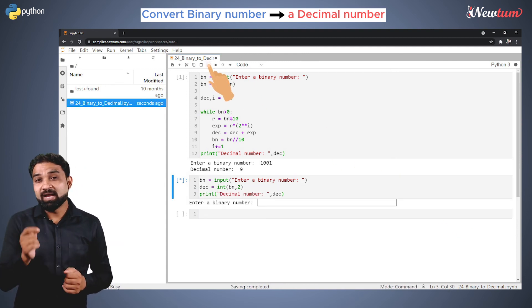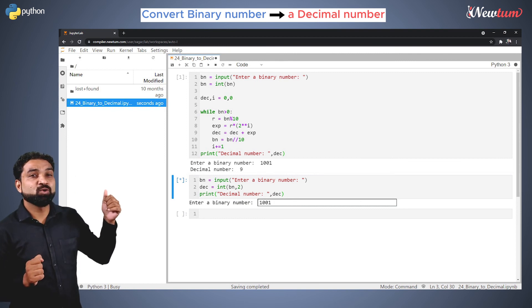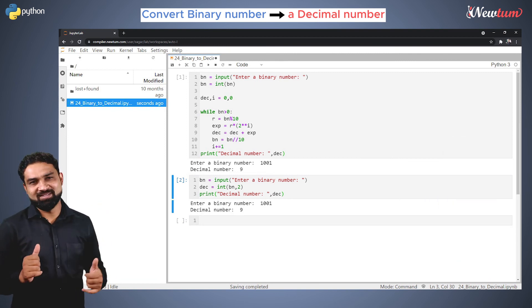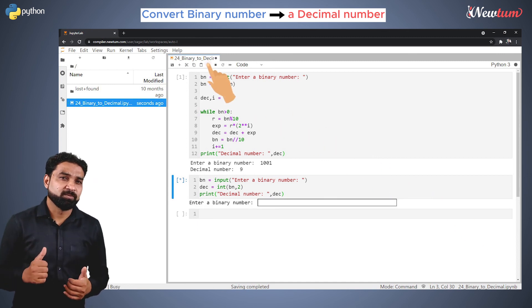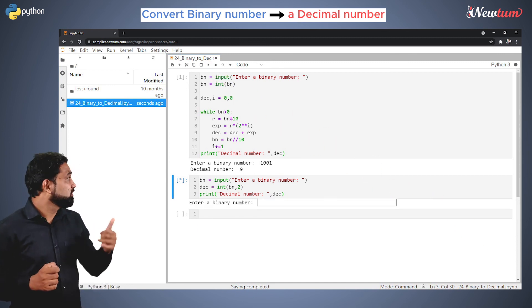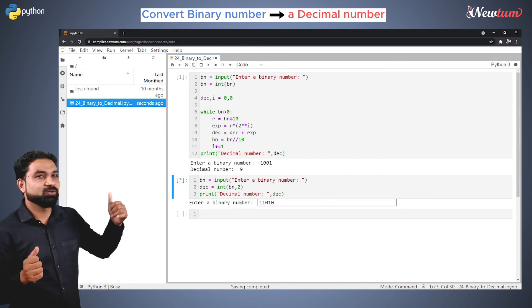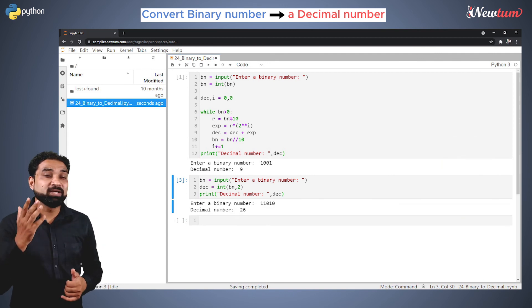Run the code and enter the input as 1001. Again you got the output 9. Rerun the code and enter the input as 11010. You got the output as 26.